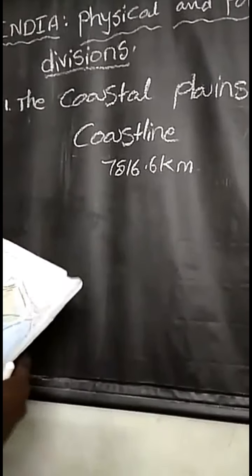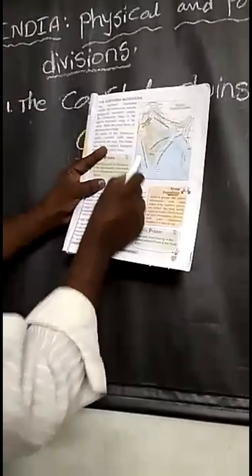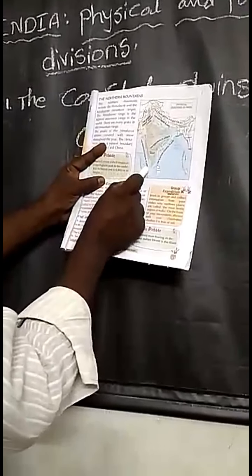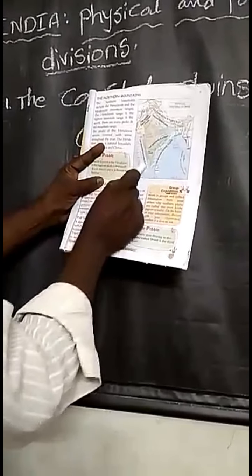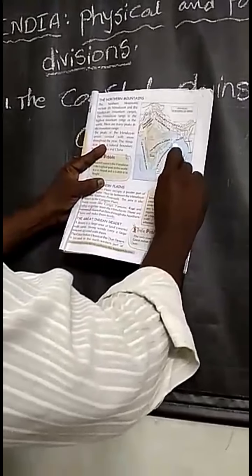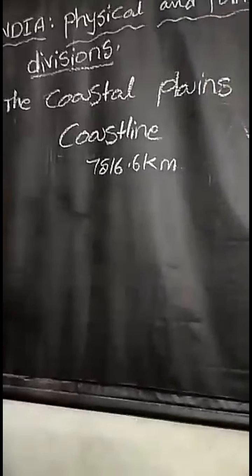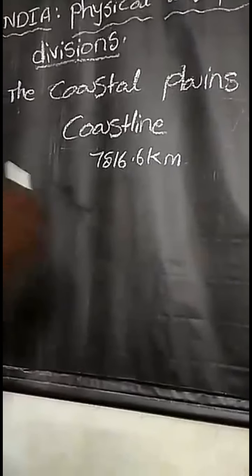On the western side is the western coastal plain - Pachimathira Maidana. On the eastern side is the eastern coastal plain - Turpathira Maidana. These two plains stretch for about 6,000 kilometers of the mainland.